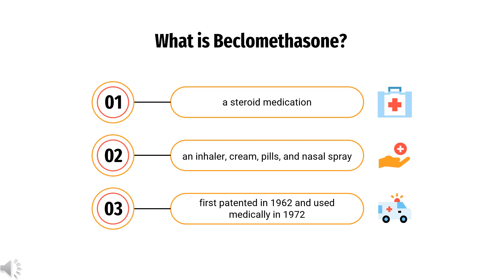The inhaled form is used in the long-term management of asthma. Beclomethasone dipropionate was first patented in 1962 and used medically in 1972. It was approved for medical use in the United States in 1976. It is on the World Health Organization's list of essential medicines. In 2020, it was the 220th most commonly prescribed medication in the United States, with more than 2 million prescriptions.